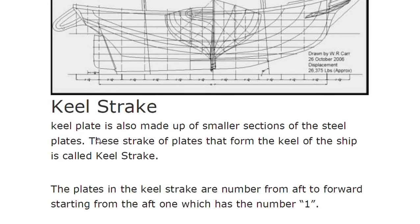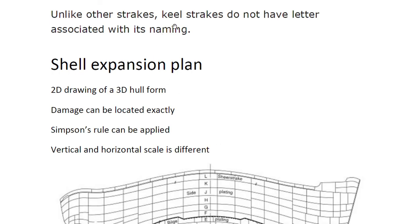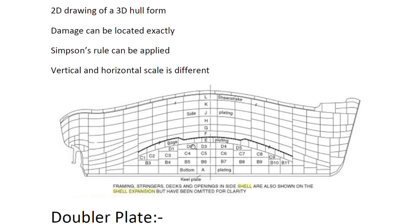The keel strake is made up of smaller sections of steel plates forming the keel of the ship. Plates in the keel strake are numbered from aft to forward starting from number one. Unlike other strakes, the keel strake does not have letters associated with its naming. The shell expansion plan is a 2D drawing of the 3D hull form where damage can be exactly located; vertical and horizontal scales are different in this plan.